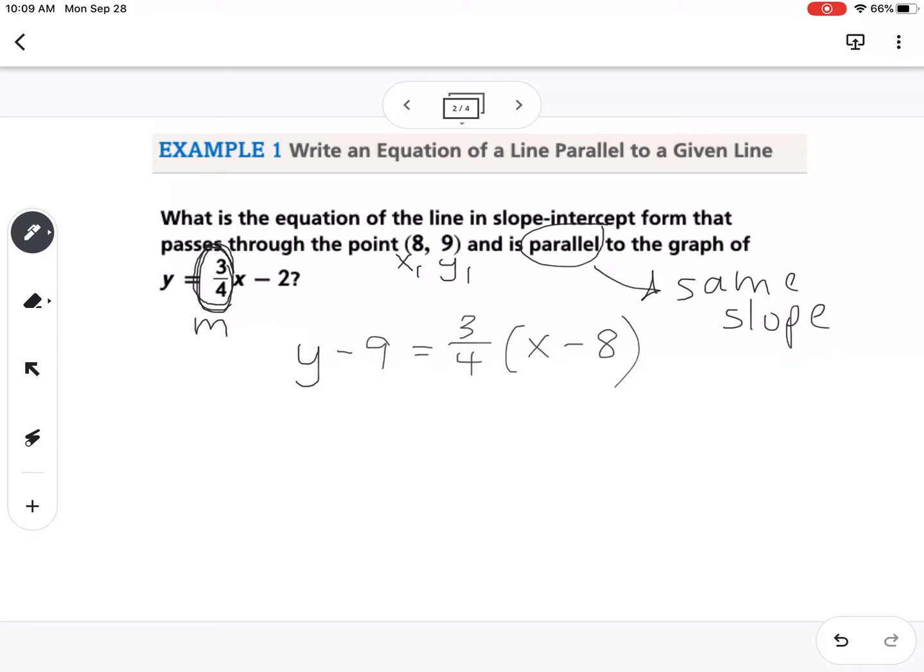Now here's the only problem. It asks us for our final answer to be in slope-intercept. So that means we now need to turn this into slope-intercept form. And that might sound complicated, but all we're going to do is we're going to distribute.